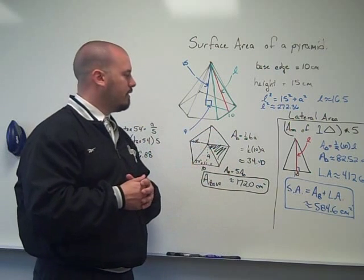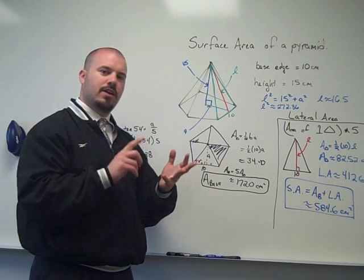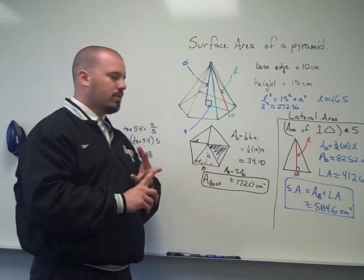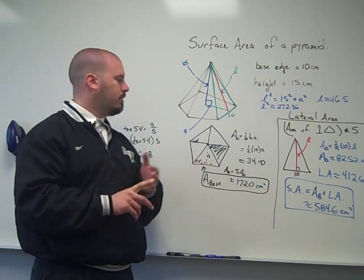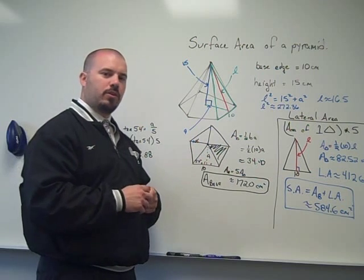So finding the surface area of the pyramid is the area of the base plus the lateral area. In this case, the lateral area, they're all isosceles triangles, and my base was a regular pentagon.